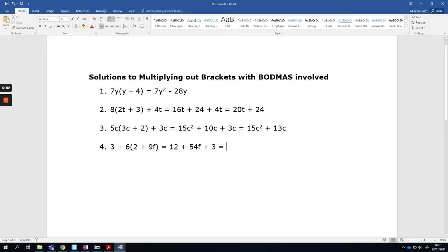Collect your like terms: 12 plus 3 gives me 15, and then you still need to do your 54f. You might have at this stage left the 3 at the front and then did plus 12+54f. That's okay. It doesn't matter which way around this middle bit is. You might have this the other way as well, 54f+15. That's also okay. You can have them any way around you like.